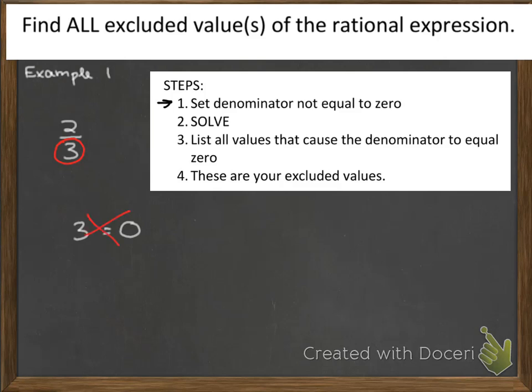So this really doesn't make sense. So after I solve this, I find out that there are no restrictions. I don't have to restrict the domain of the function because there are no variables in the denominator anyways. So in this problem, I do not have any excluded values. So here I can just write none.